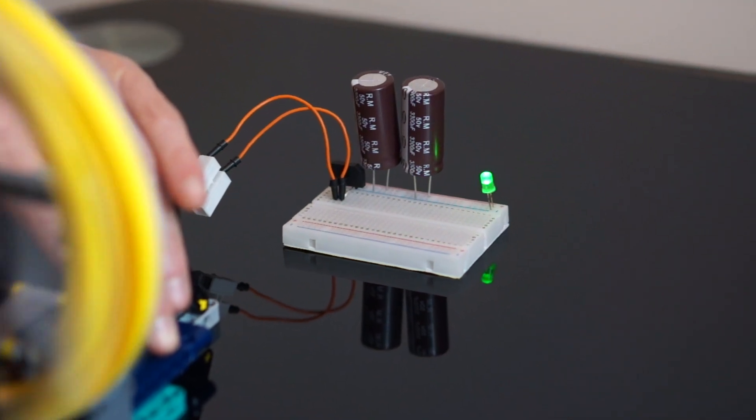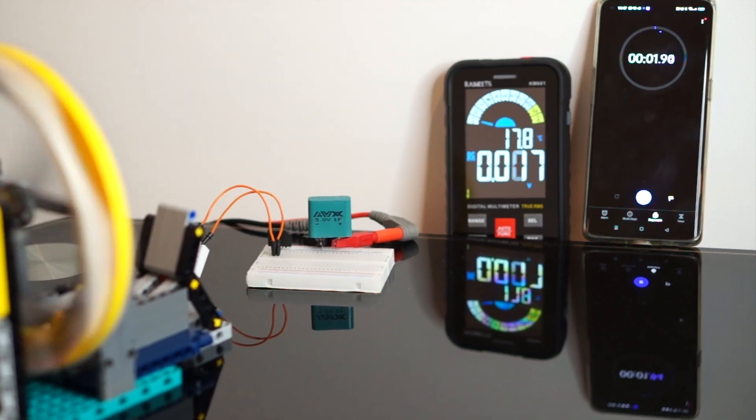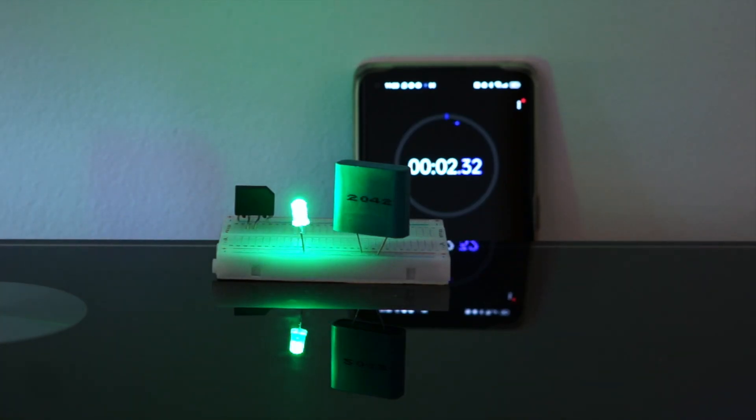We'll also use some small capacitors to smooth out the generator output and to see how long it takes for different magnets to fill up a capacitor bank so that we can power some LED lights for a short time.